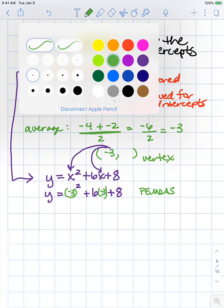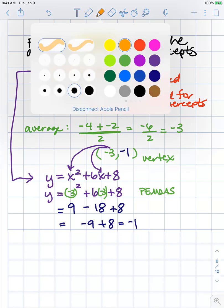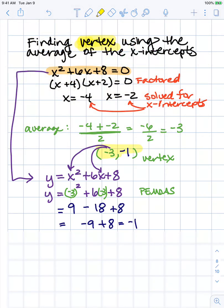(-3)² gives me positive 9, then 6 times -3 is -18, then add 8. 9 minus 18 is -9, plus 8 gives me -1. So my y-coordinate is -1, and this is my vertex.